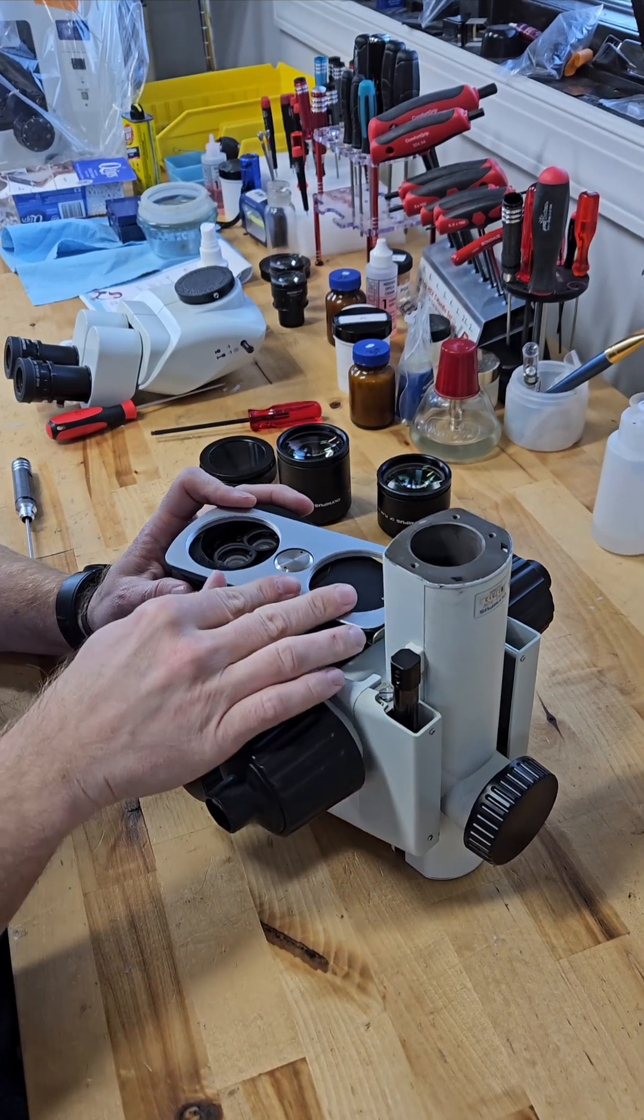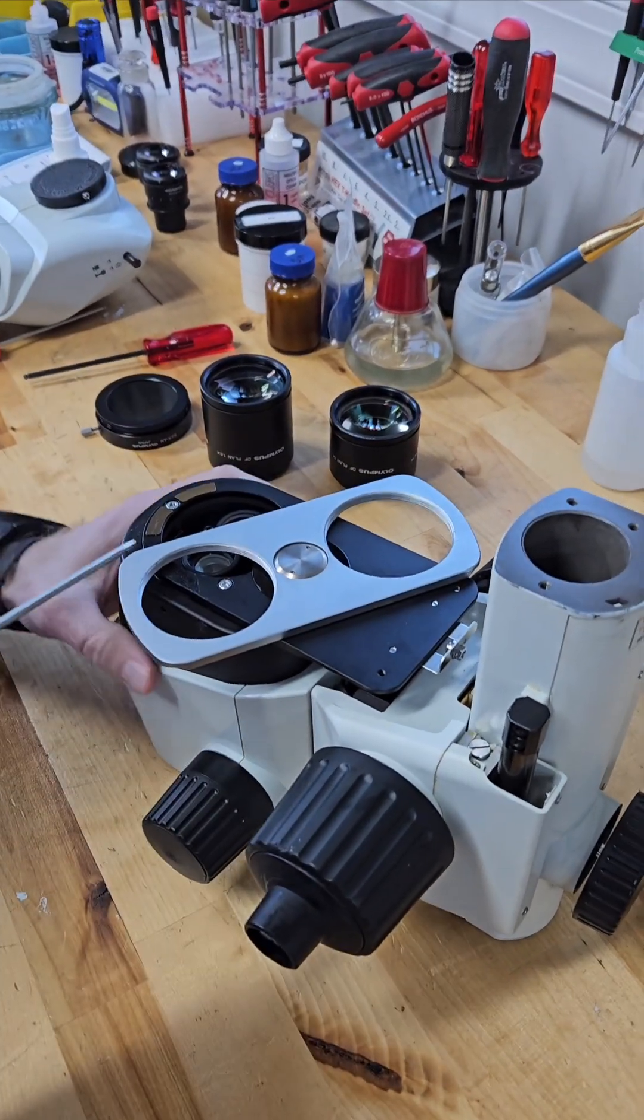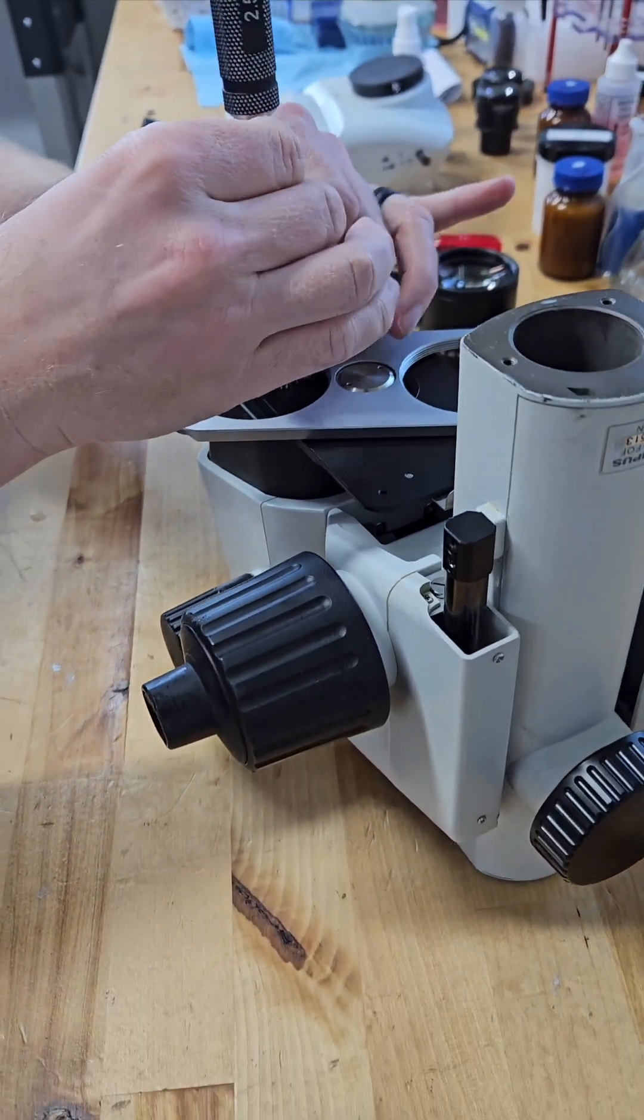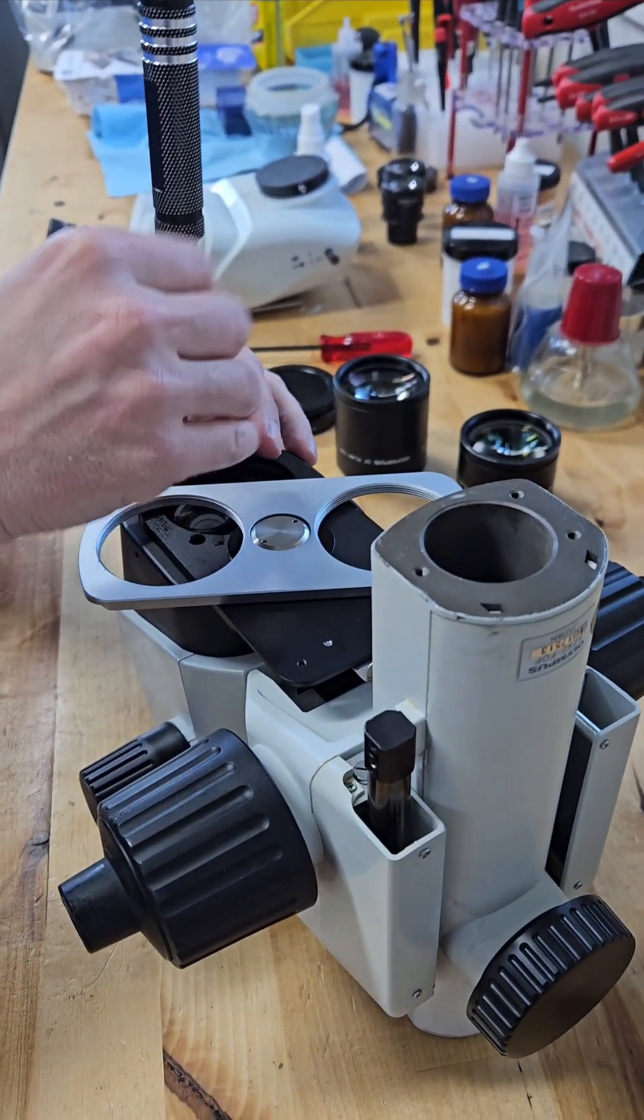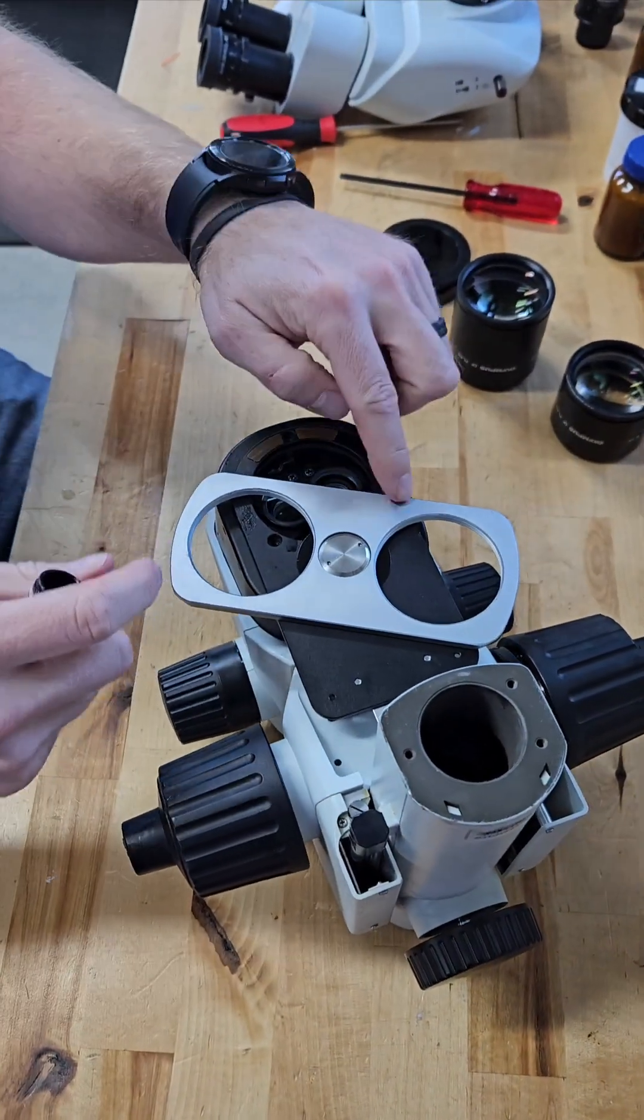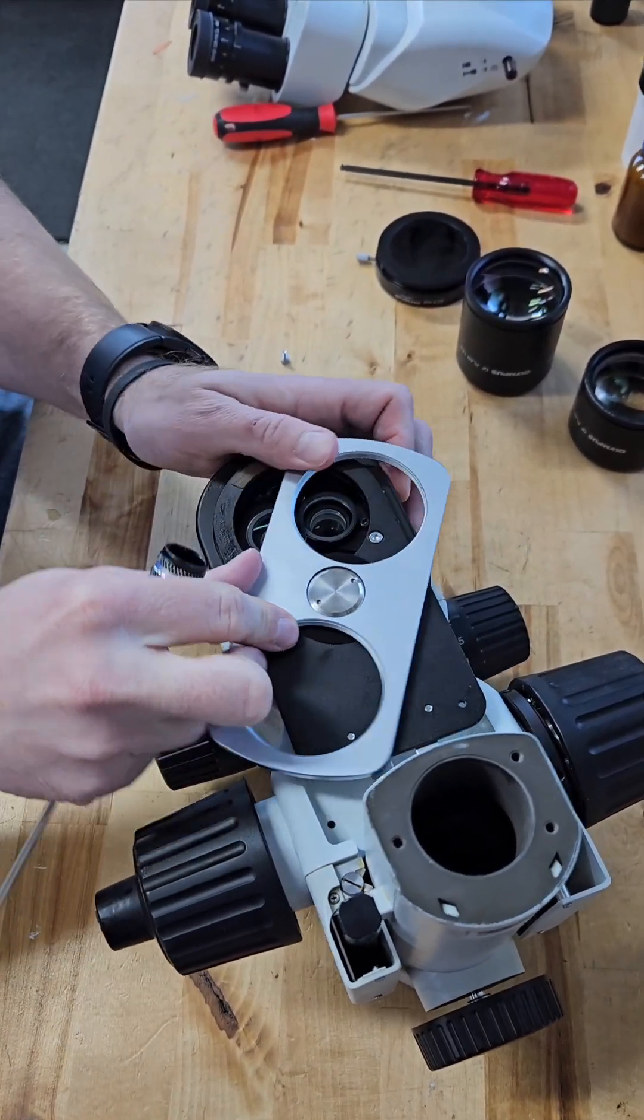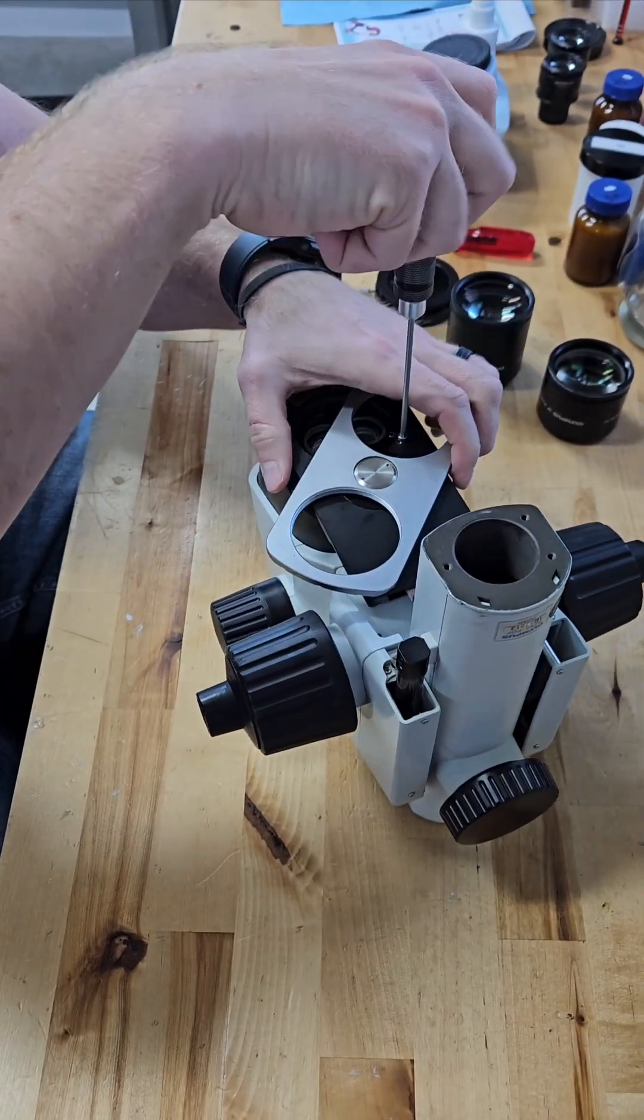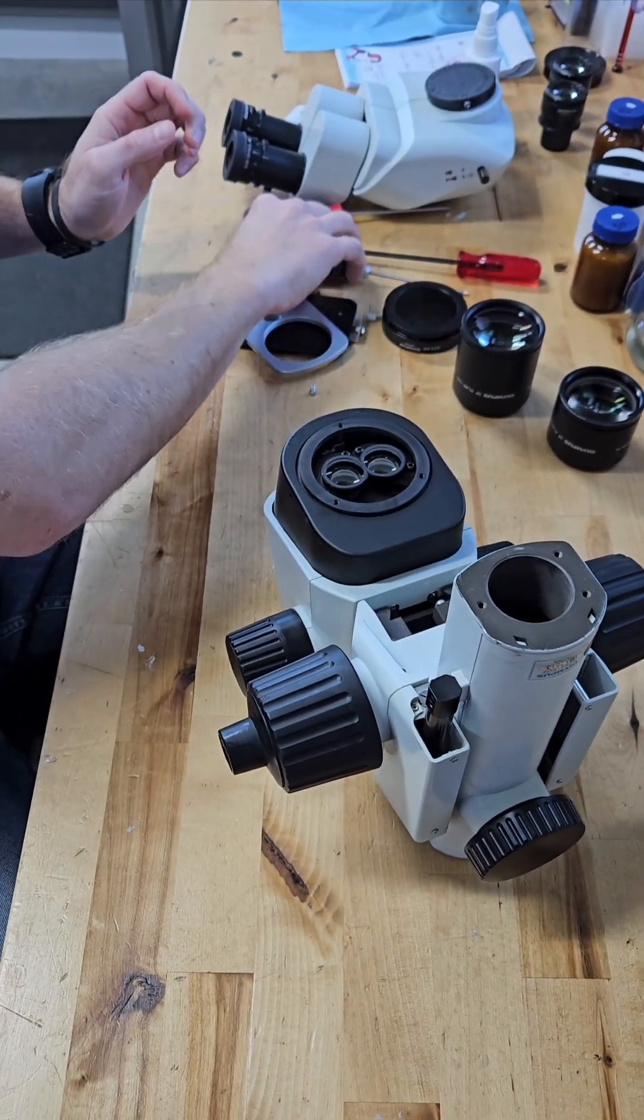Once both objectives have been removed, you can turn this right here off center. And with a 2.5 millimeter Allen wrench, you can loosen and take out each one of these screws. There's going to be three of them. And then see how we can't see the third screw? You're going to have to rotate the turret back to get access. Once you do that, the whole assembly comes off.